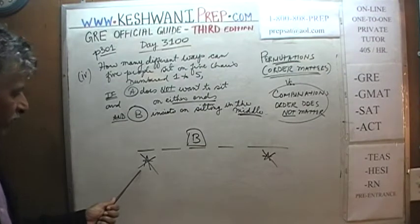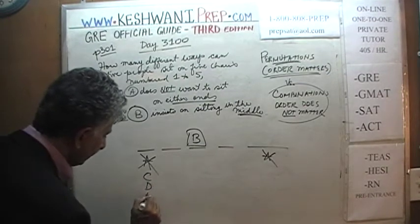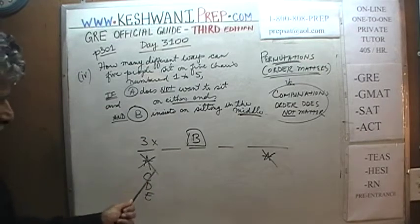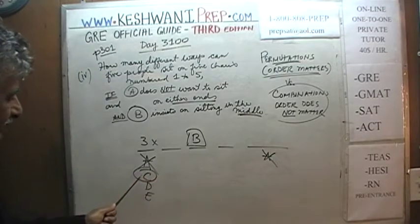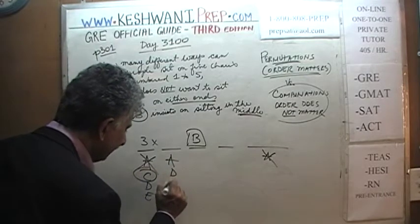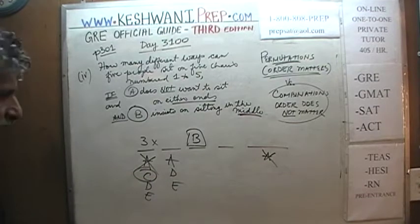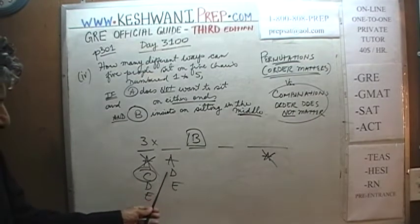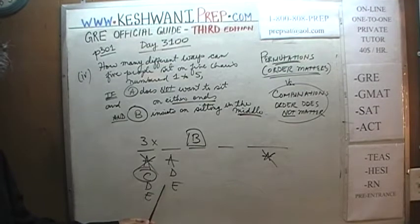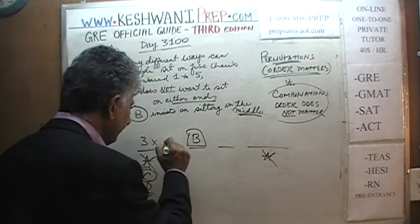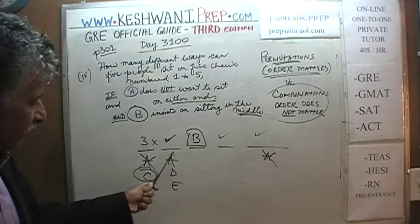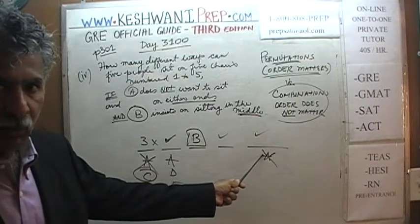If A cannot go here and B is already sitting in the middle, that leaves us with the choice of C, D, or E for the first chair — three choices. Now, this is where I made a mistake. Listen very carefully, because it is a very easy mistake to make. Having three choices here assumes that any one of these three people can sit on any one of these three empty seats. Which, of course, we know is not true — A cannot go on the other end either.